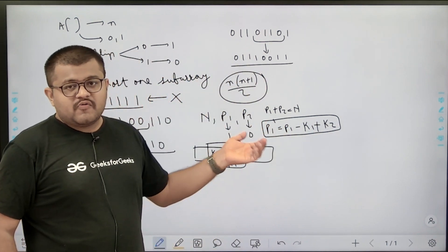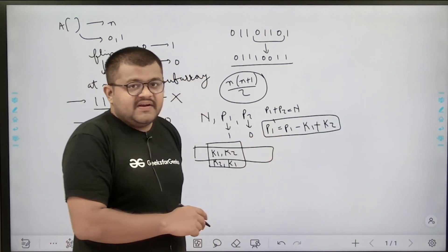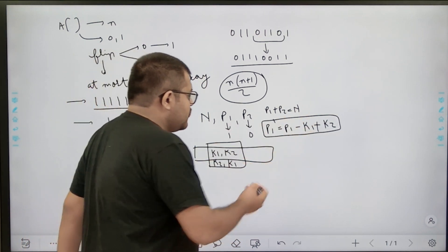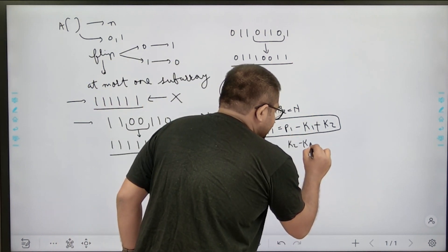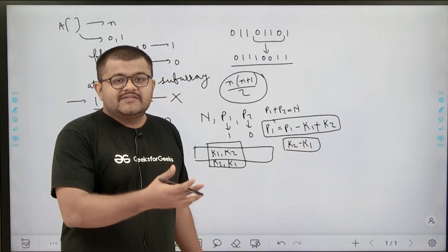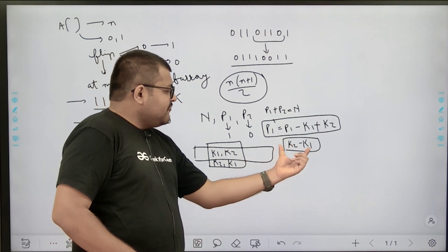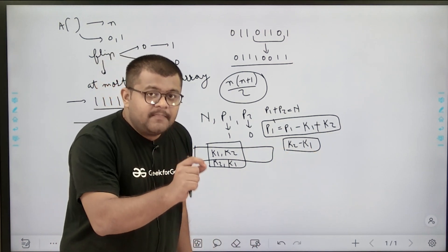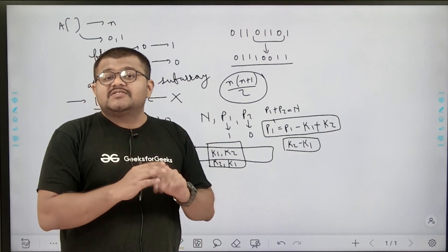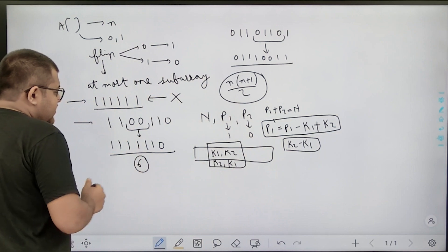This is my general formula to maximize. p1_dash = p1 - k1 + k2. Since p1 is constant (the initial number of ones), I need to maximize k2 - k1, which is the difference of the number of zeros and ones in the selected sub-array. I need to select a sub-array such that this difference is maximum.